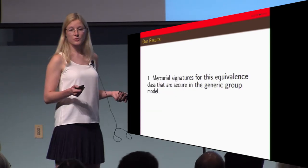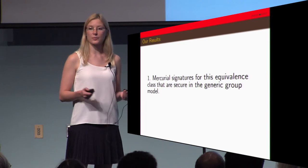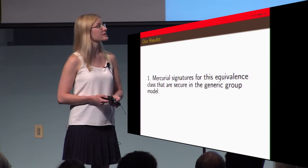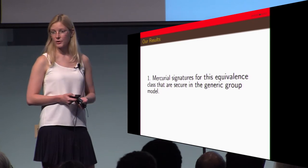We have two main results. The first is we were able to realize Mercurial signatures and prove them secure in the generic group model.